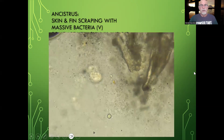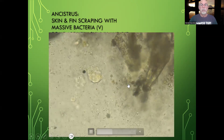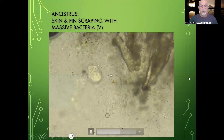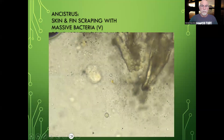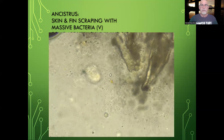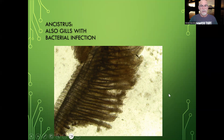Here we see the video of a massive amount of bacteria. You can see these moving black tiny spots — maybe two or three different kinds of bacteria — that have an impact on the skin and fins of this Ancistrus. You can observe this with a microscope at a higher magnification of 400x. We also found that the gills were infected: you can see some demolition, necrotic parts, and lamellae that were eaten away or consumed by the bacteria.